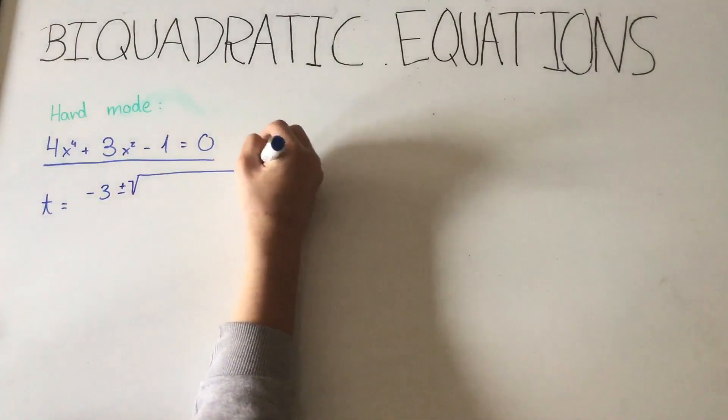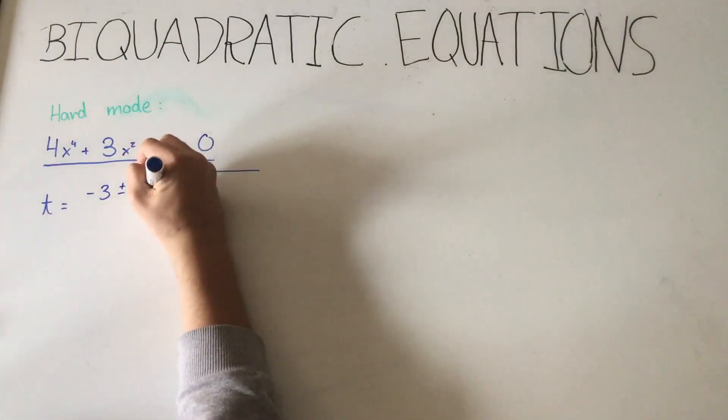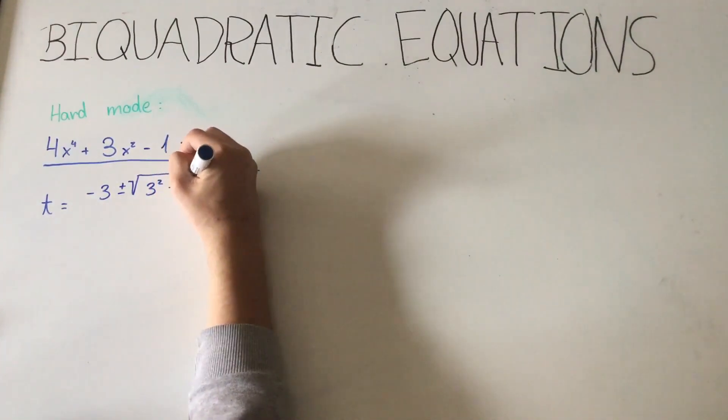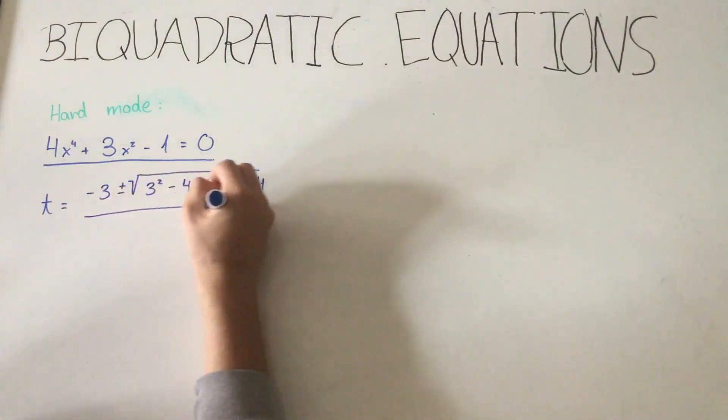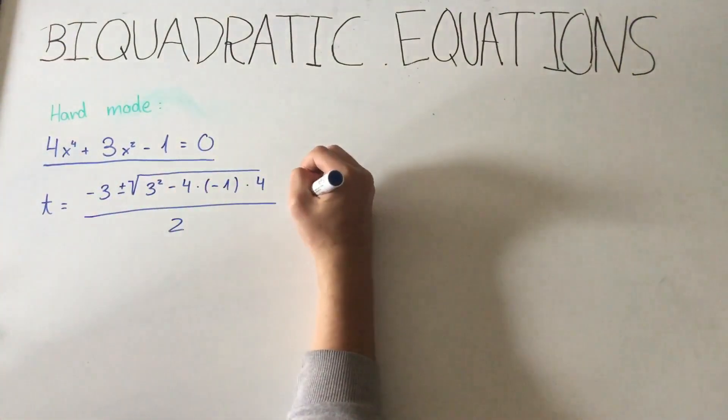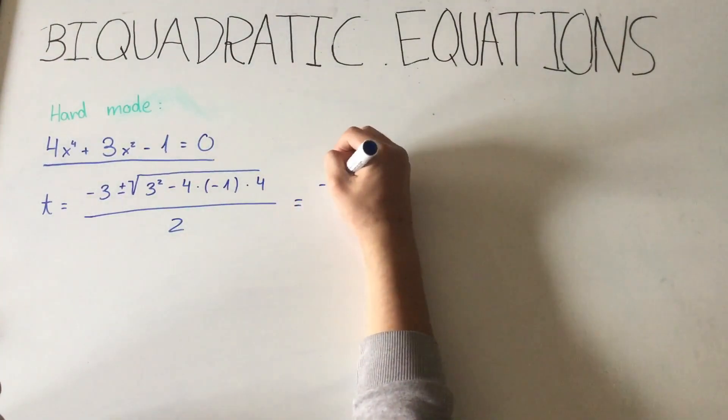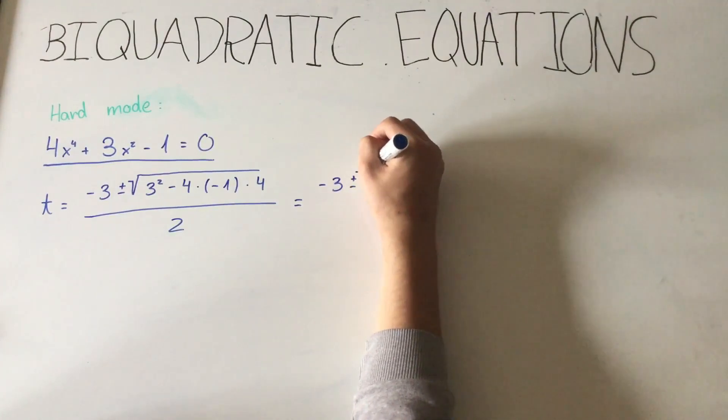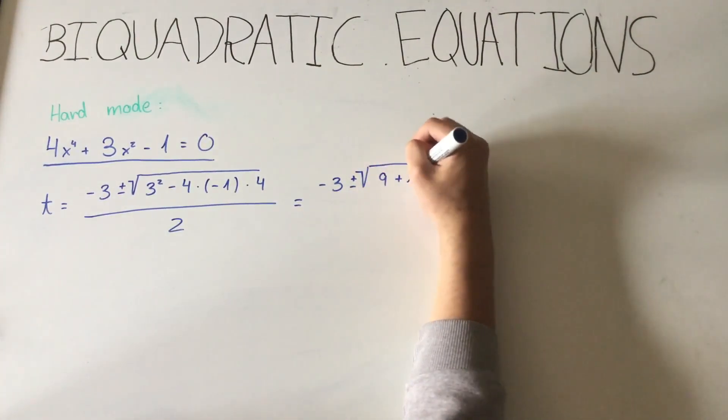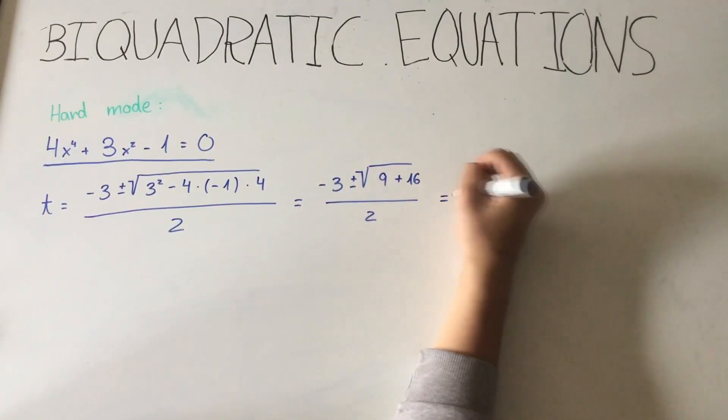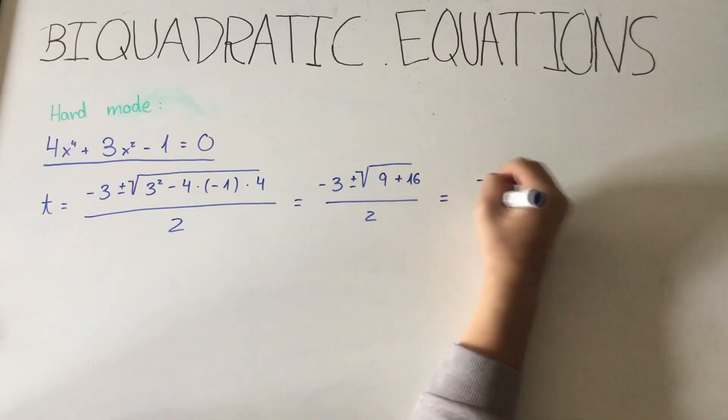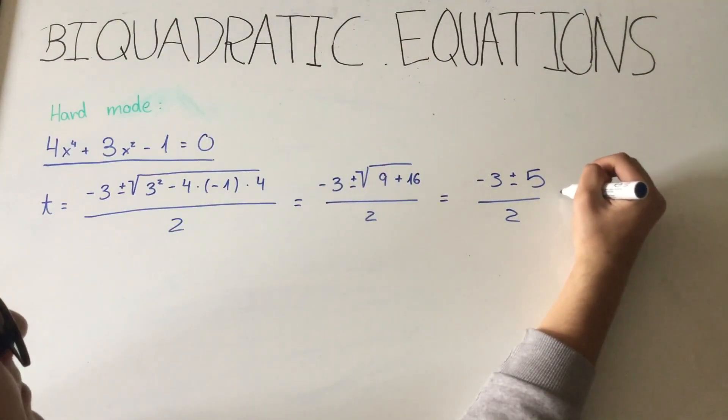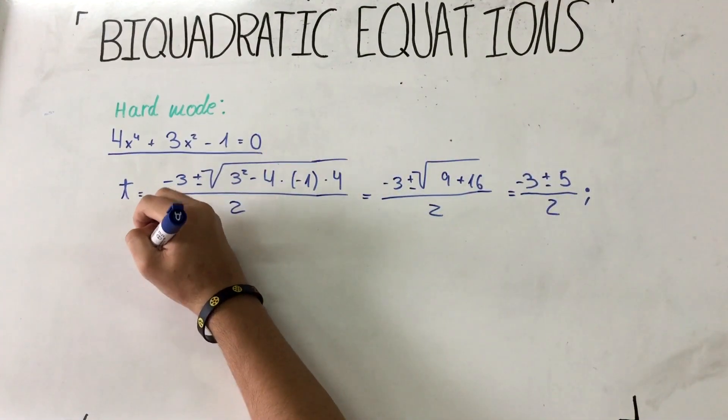We do the same as we did in the last equation. So we change x to the fourth for t squared and x to the second for t. And then we apply the quadratic formula.